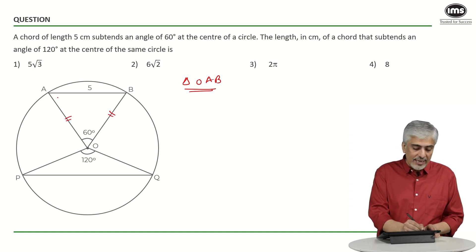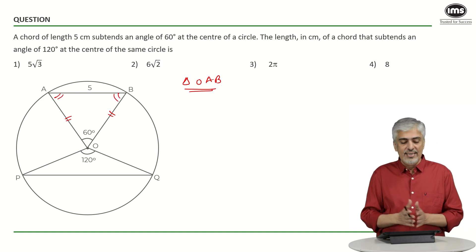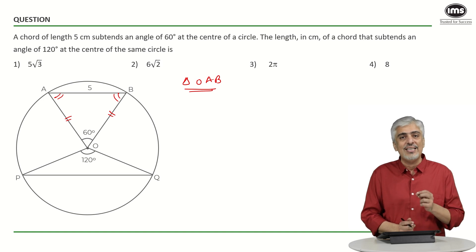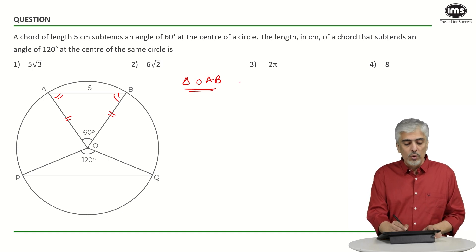So automatically triangle OAB becomes an equilateral triangle because one angle is 60, which means the total of the other two angles were 120, 180 minus 60, which means each of them will become 60, 60. So triangle OAB becomes an equilateral triangle.